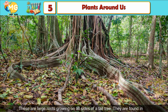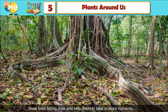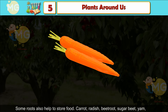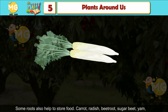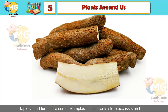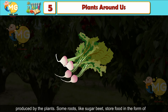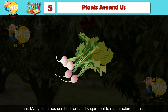Buttress roots are large roots growing on all sides of a tall tree. They are found in rainforests where the soil is poor, so roots do not go deep. They prevent trees from falling over and help them take in more nutrients. Food storage roots such as carrot, radish, beetroot, sugar beet, yam, tapioca, and turnip store excess starch produced by the plant. Some roots like sugar beet store food in the form of sugar.